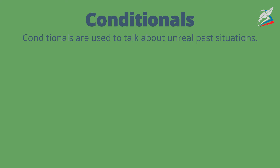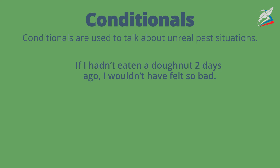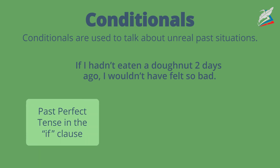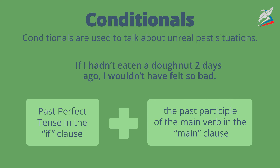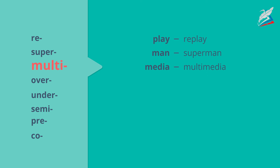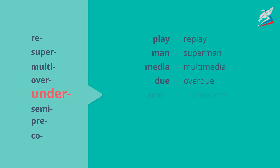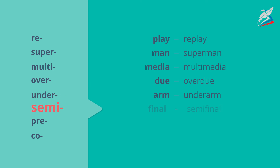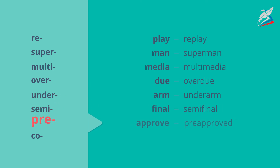In English, we can form new words by adding prefixes to existing words. For example: if I hadn't eaten a donut two days ago, I wouldn't have felt so bad. To form a type 3 conditional sentence, we use past perfect tense in the if clause and 'would have' plus the past participle in the main clause. Some prefixes are: Re- (replay), Super- (superman), Multi- (multimedia), Over- (overdue), Under- (underarm), Semi- (semi-final), Pre- (pre-approved), Co- (co-worker).